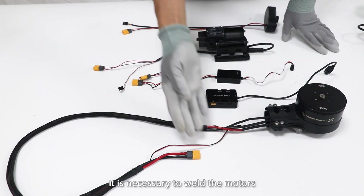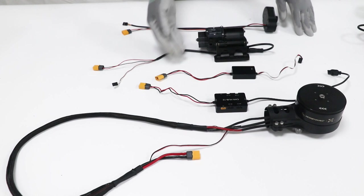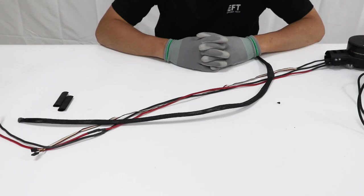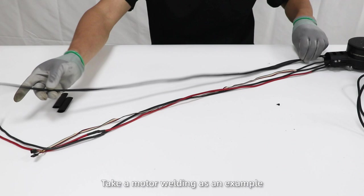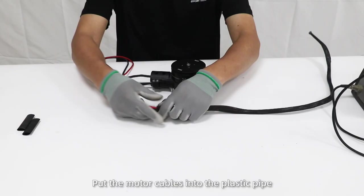Accessories welding. Before assembling the drone frame, it's necessary to weld the motors, CAN hub module, PMU, water pump, and the camera. Take a motor welding as an example.